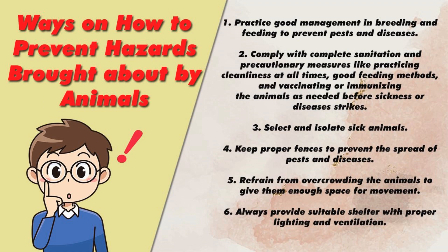Ways to prevent hazards brought about by animals: One — Practice good management in breeding and feeding to prevent pests and diseases. Two — Comply with complete sanitation and precautionary measures, like practicing cleanliness at all times, good feeding methods, and vaccinating or immunizing the animals as needed before sickness or diseases strike. Three — Select and isolate sick animals. Four — Keep proper fences to prevent the spread of pests and diseases. Five — Refrain from overcrowding the animals to give them enough space for movement. Six — Always provide suitable shelter with proper lighting and ventilation.